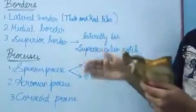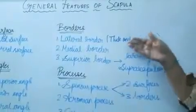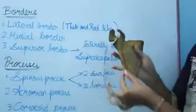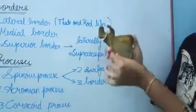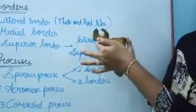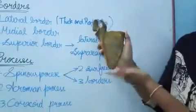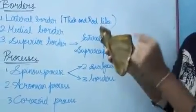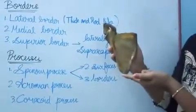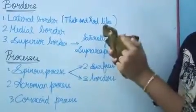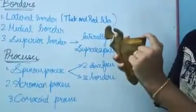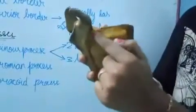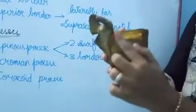Now coming to the borders. There are three borders: the lateral border, medial border, and the superior border. The lateral border is very thick and rod-like, present between the glenoid cavity and the inferior angle. The medial border is thin and is present between the superior angle and the inferior angle. The superior border is very sharp, and if we trace it laterally, we can see a small notch called the suprascapular notch.